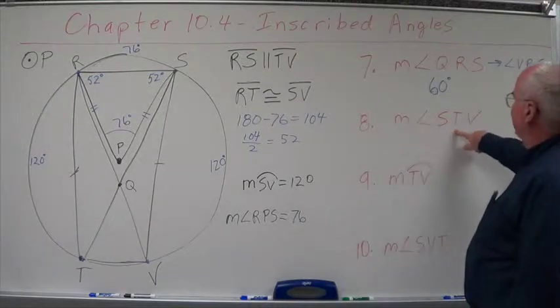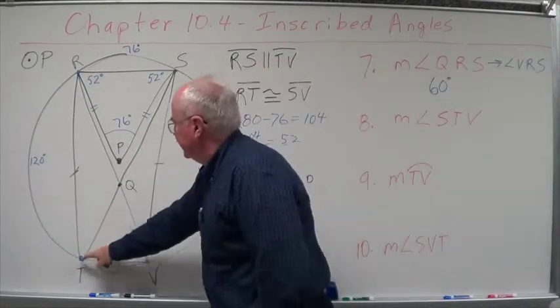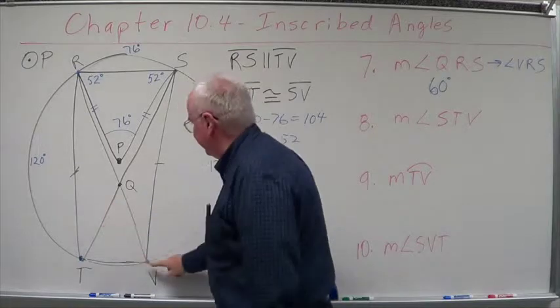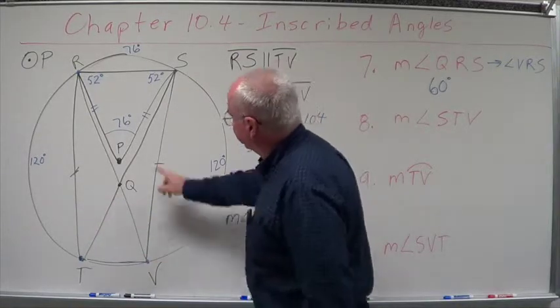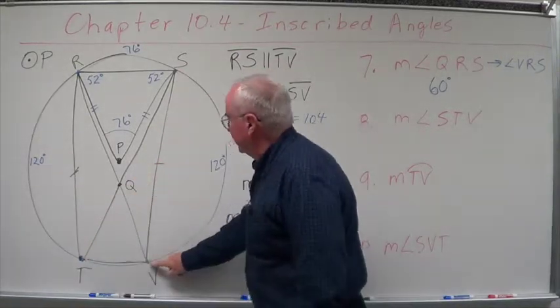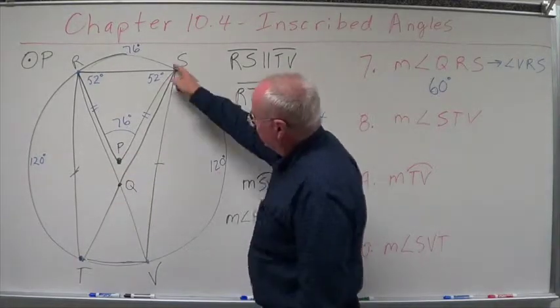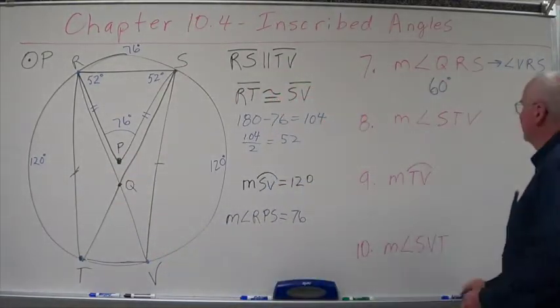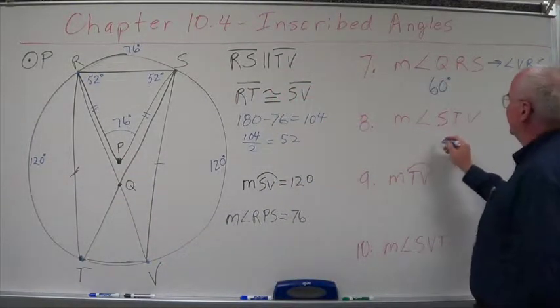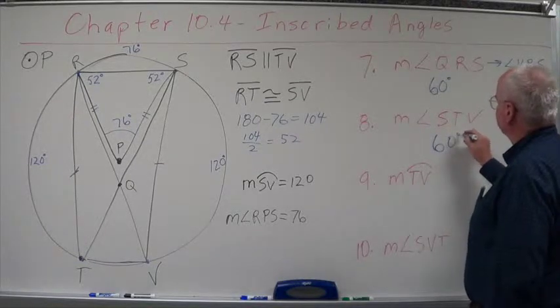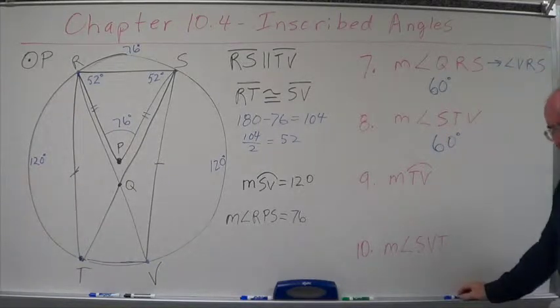Measure of angle STV. S-T-V. Well, STV also creates this arc, doesn't it? Starts at S, goes to T, and comes to V. Creates arc SV. So therefore, it has to be the same. So this also has to be 60 degrees.